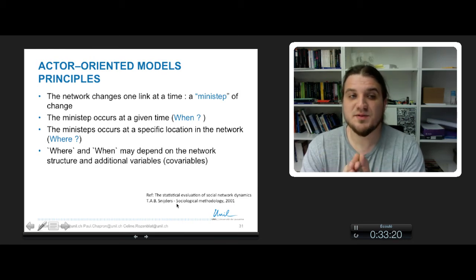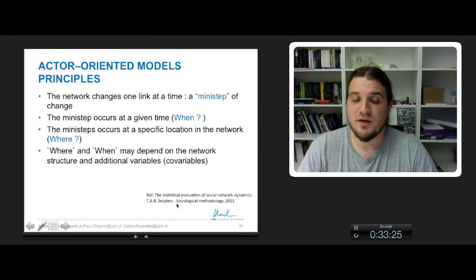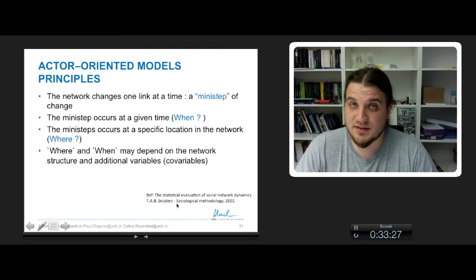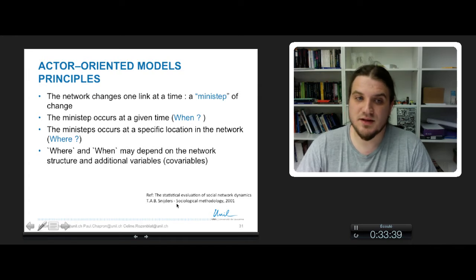And this mini-step occurs for a specific link between two specific nodes i and j. So the question is, where does it occur? And the answers to these two questions, where and when, may depend on the network structure and additional variables that are called covariates or co-variables.